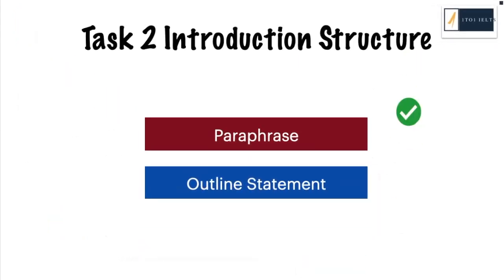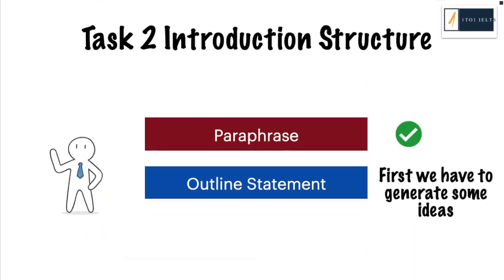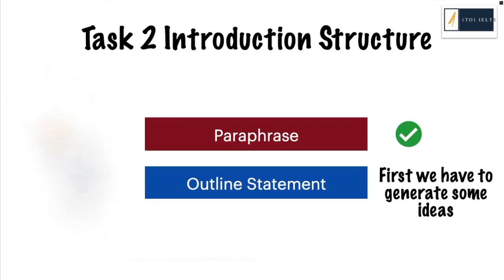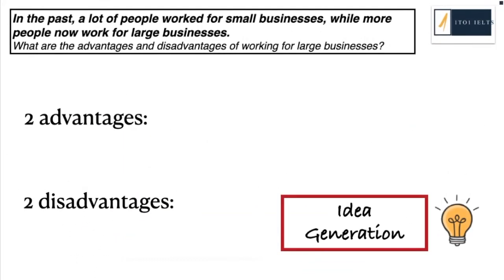Now we have completed the first part of our introduction — we have a really good paraphrase. Next, we need to look at the outline statement. When we write an outline statement, we have to think about generating ideas. As mentioned at the beginning of the video, we need two advantages and two disadvantages.